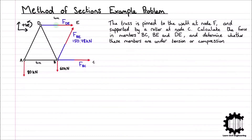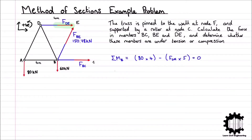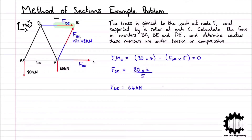The next force we will determine is FDE. To do so, we will take the moments around node B, as this will eliminate FBC from our equation. The sum of all moments around node B equals 80 × 4 − FDE × 5 = 0. Rearranging for FDE gives FDE = (80 × 4) / 5 = 64 kN. As we assumed the internal force to be tensile and our value for FDE is positive, the force of 64 kN in member DE is tensile.